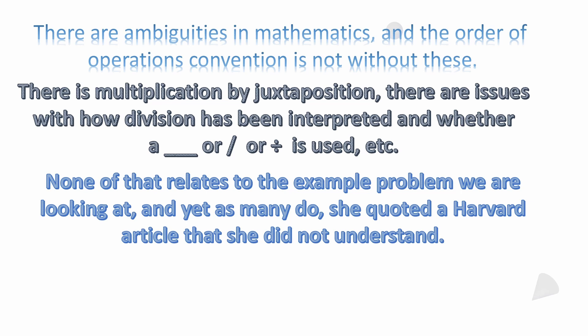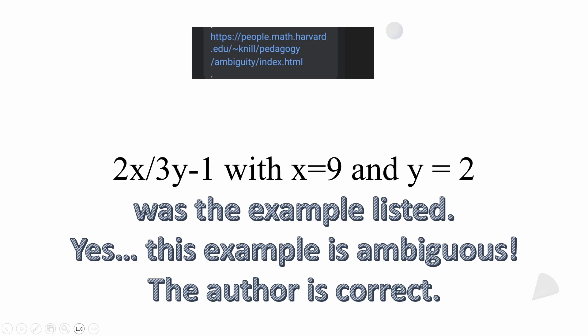This person quoted a Harvard article that she obviously didn't understand. It's an article talking about ambiguities that don't even exist in this problem, but people like to use articles like that to try to discredit order of operations — even though they don't understand what the point of the article was. Critical thinking should obviously lead one to understand that this Harvard article is not even related to the problem we're looking at.